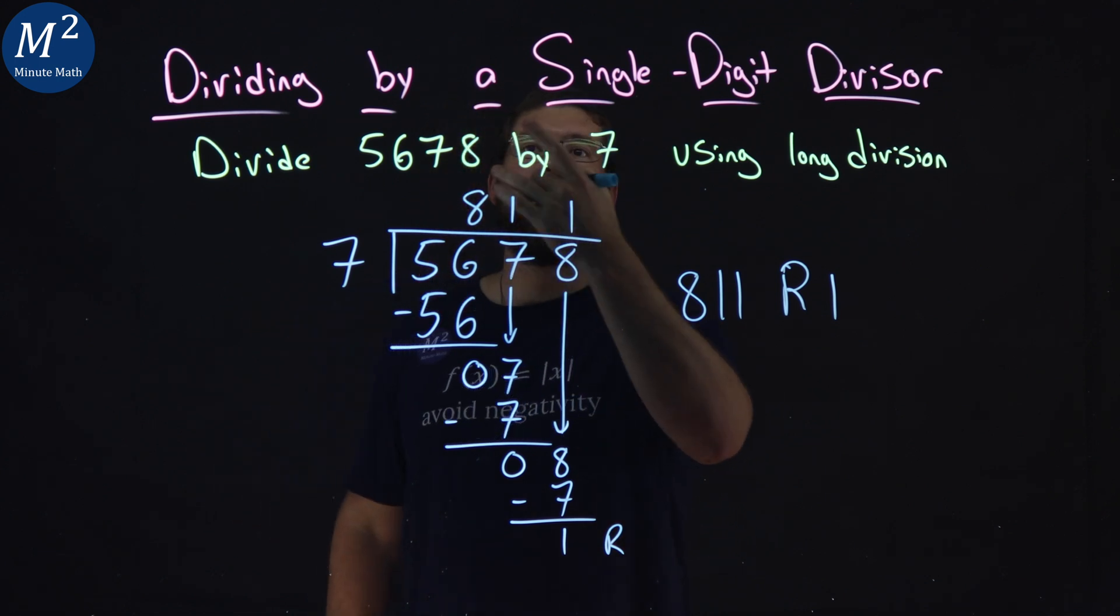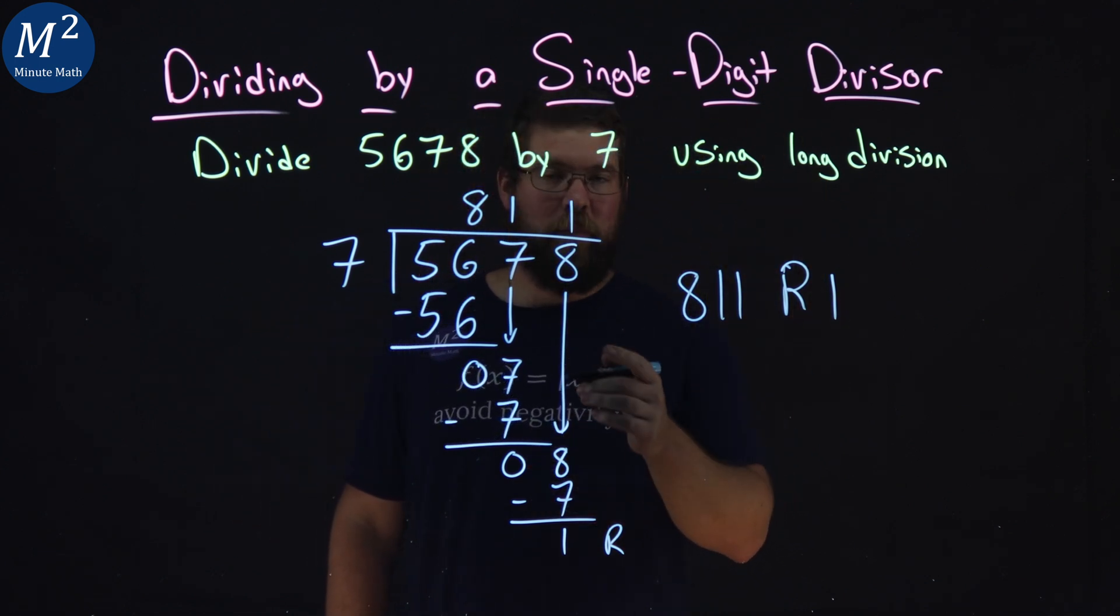And so 5,678 divided by 7 is 811 with a remainder of 1. I hope you learned something here about dividing by a single digit divisor. And as always, thanks for watching.